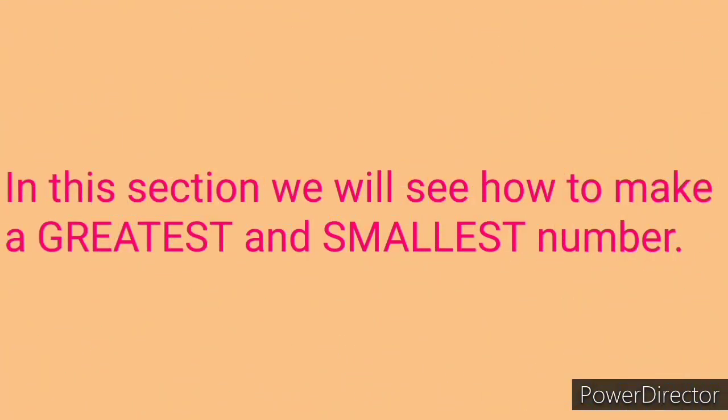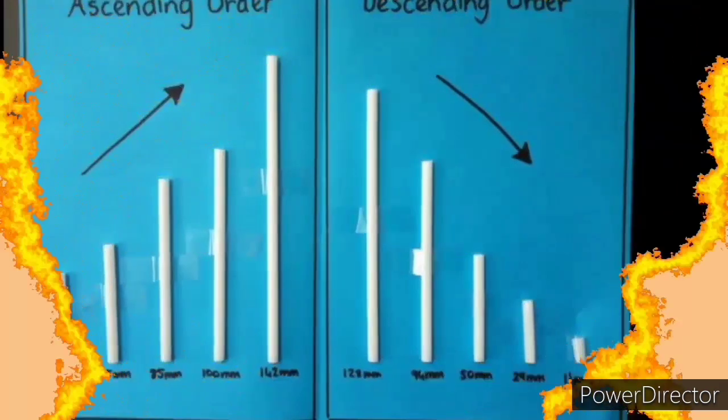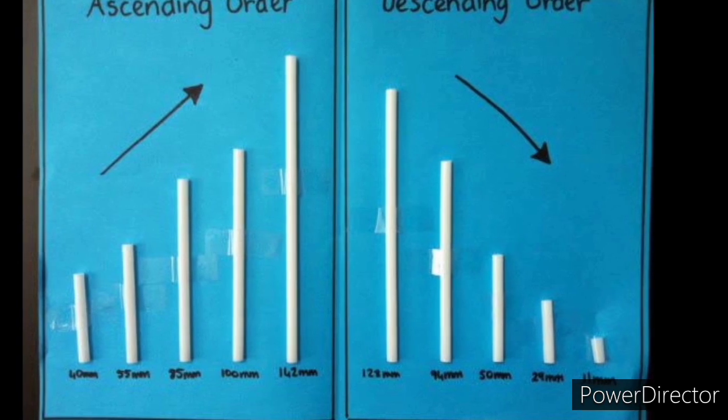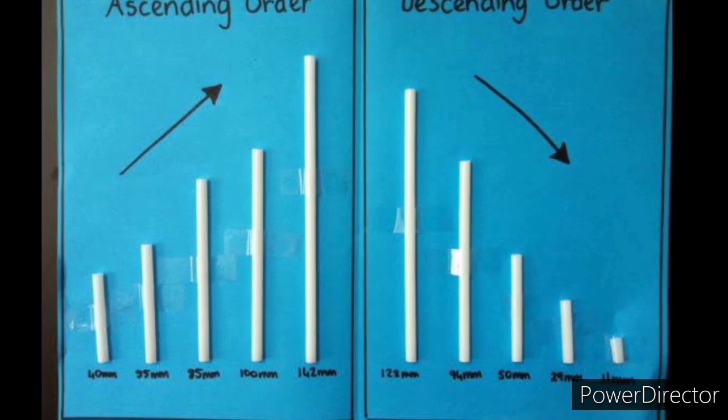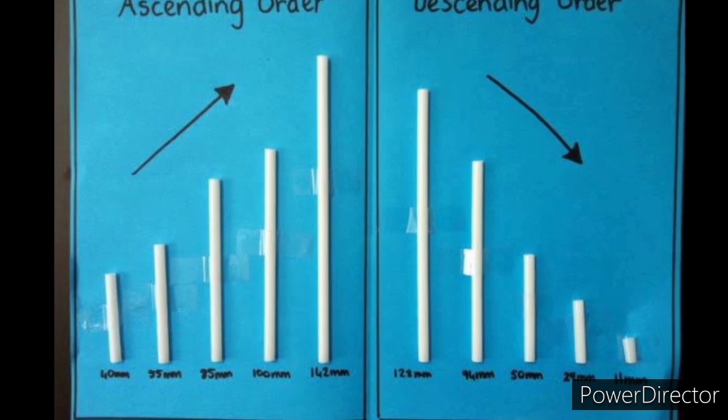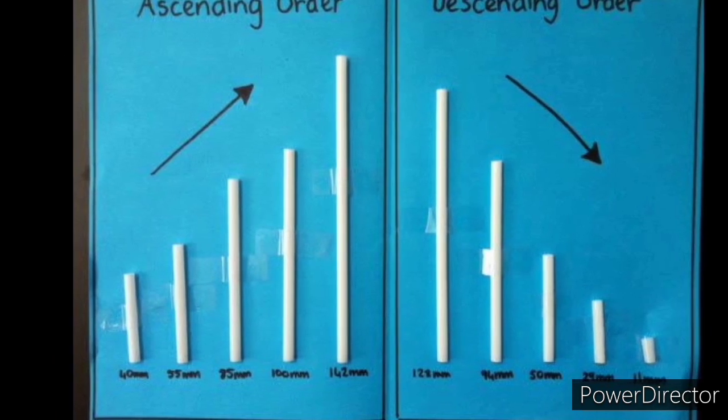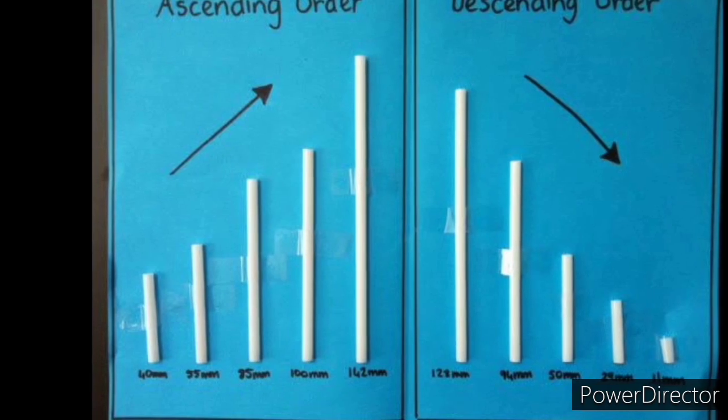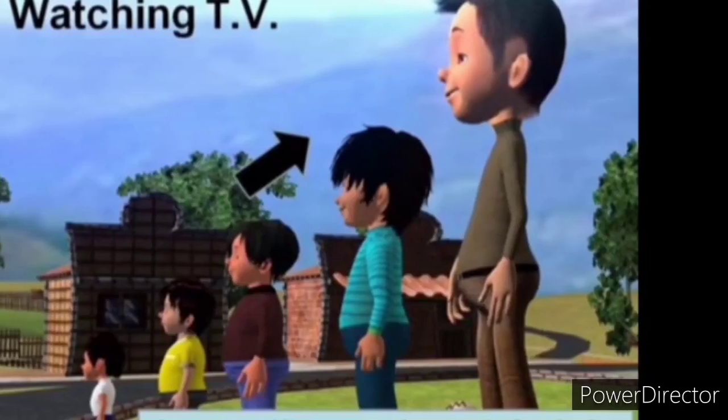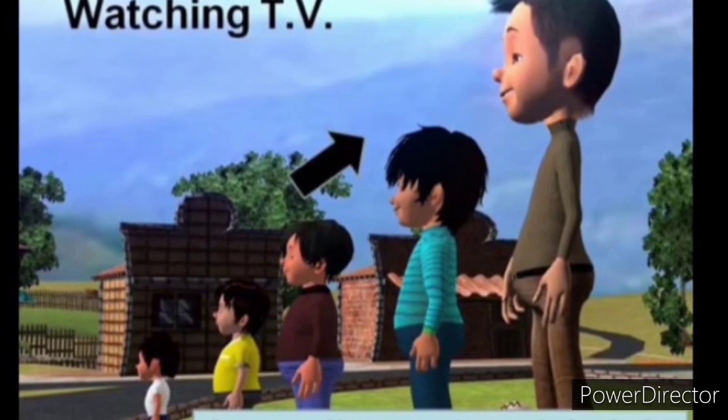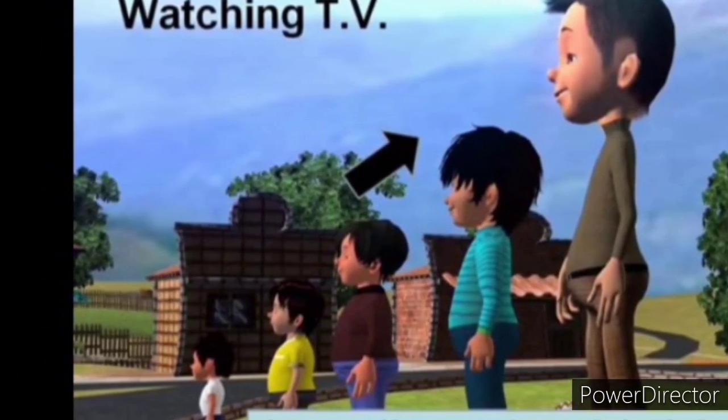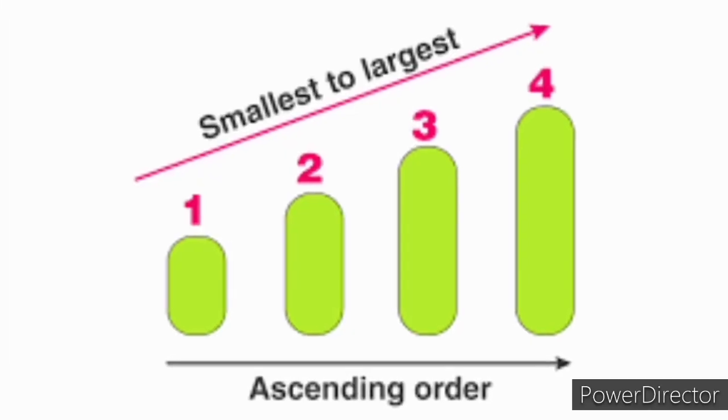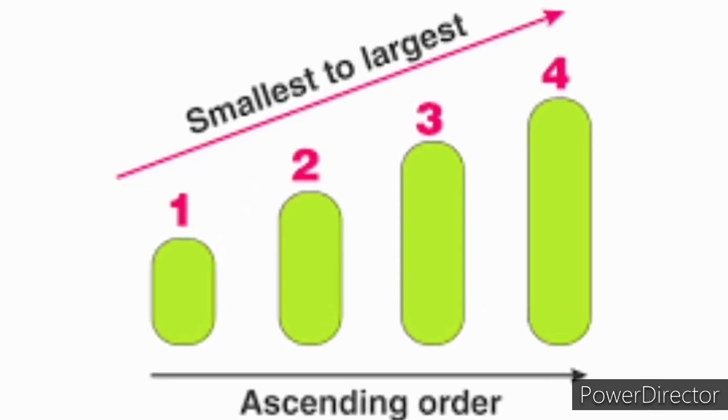In this section, we will see how to make a greatest and smallest number. Before we start the section, we shall know the ascending and descending order. So here is some small description about ascending and descending order with the help of some pictures. Look at the picture, students. It's ascending order. That means increasing order, smallest to the largest one.